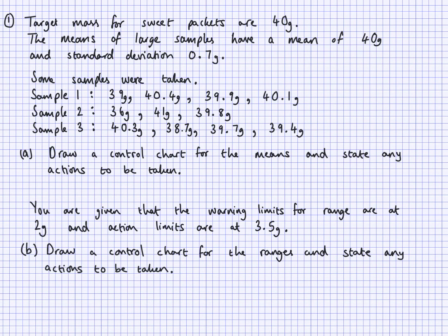Here are some questions for you. First, draw a control chart for the means and state any actions to be taken, using the same context and values described. Second, using the same values and context, draw another control chart for the ranges. For the range chart, the warning limits are given as 2 grams and the action limits are at 3.5 grams. Think about what the control chart would look like for ranges given those limits — two control charts in total: one for means and one for ranges.